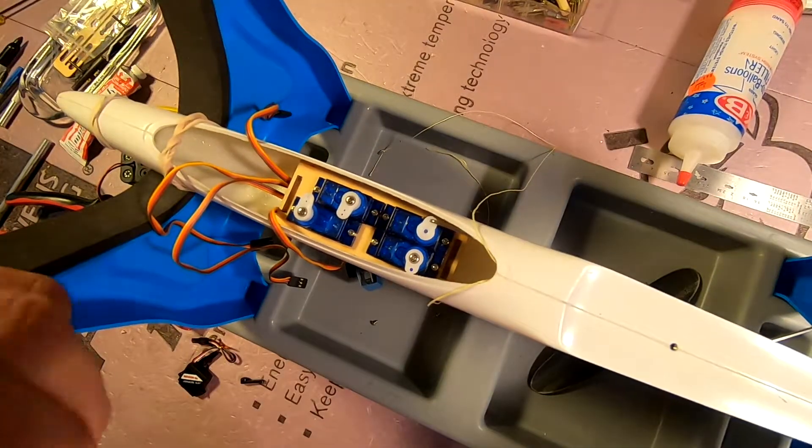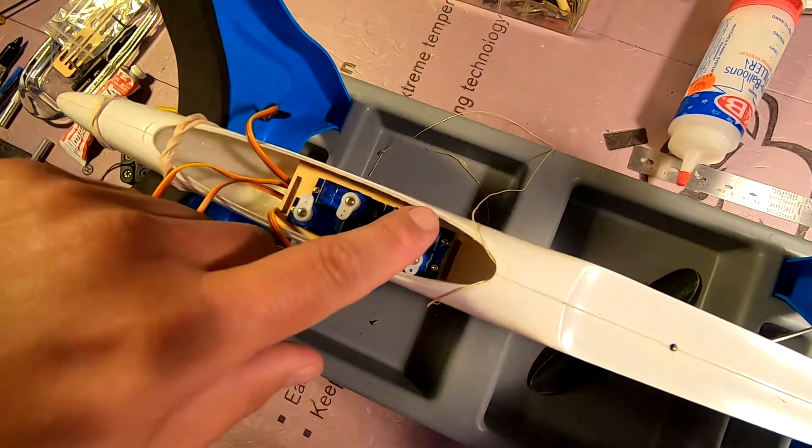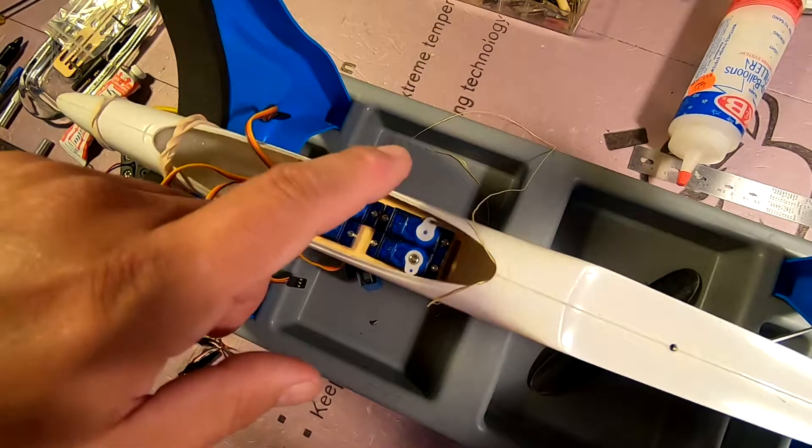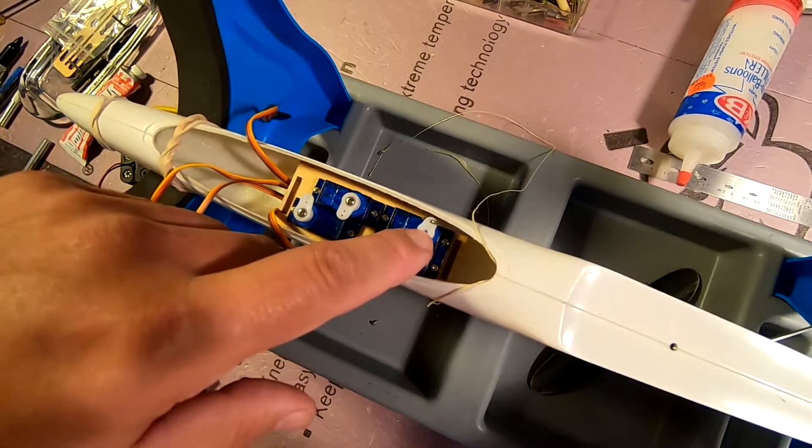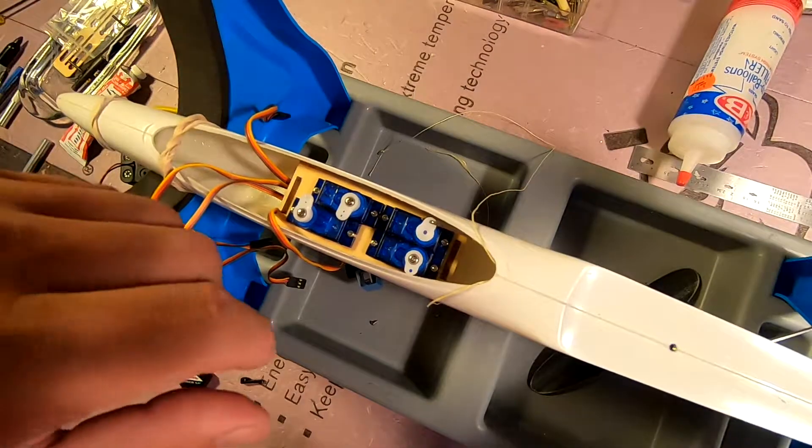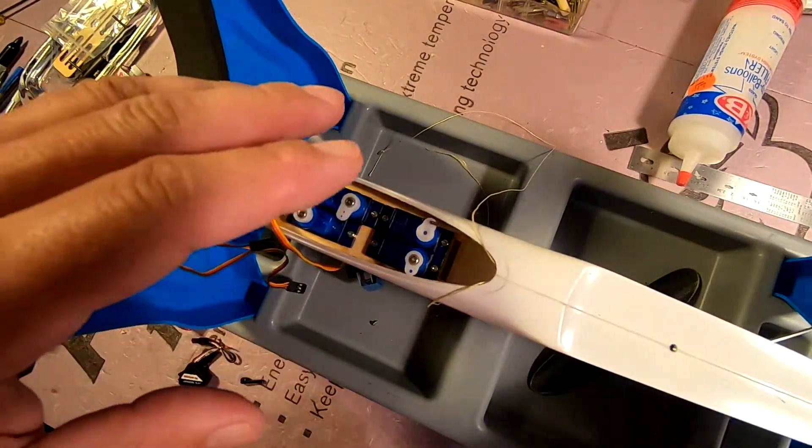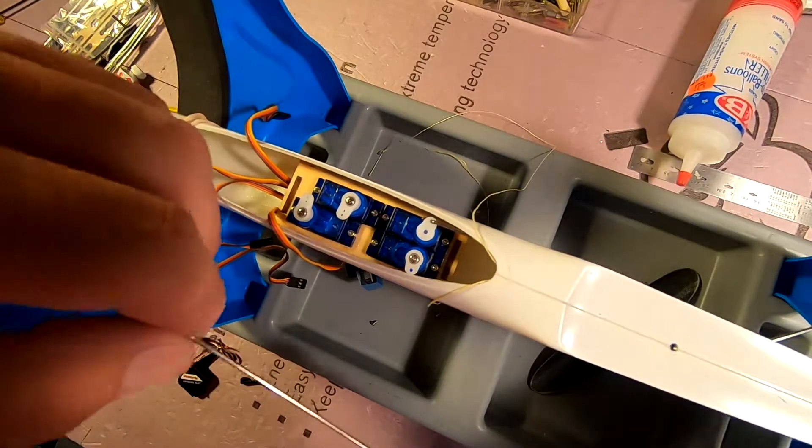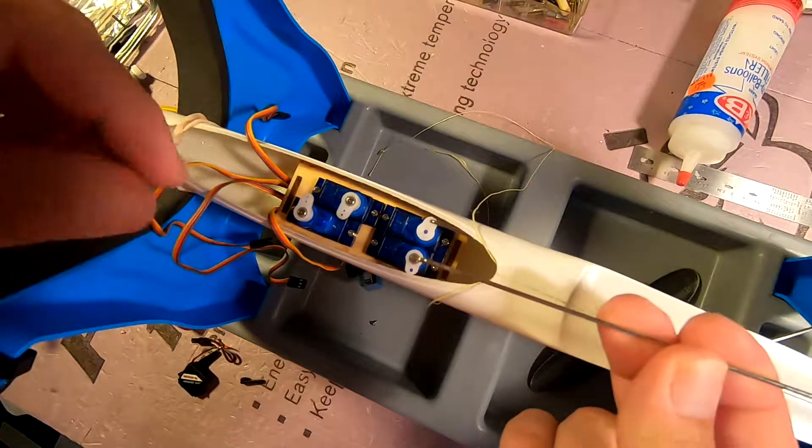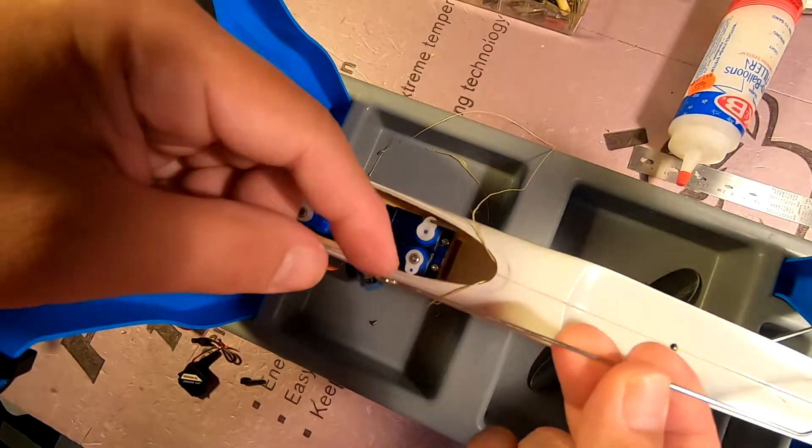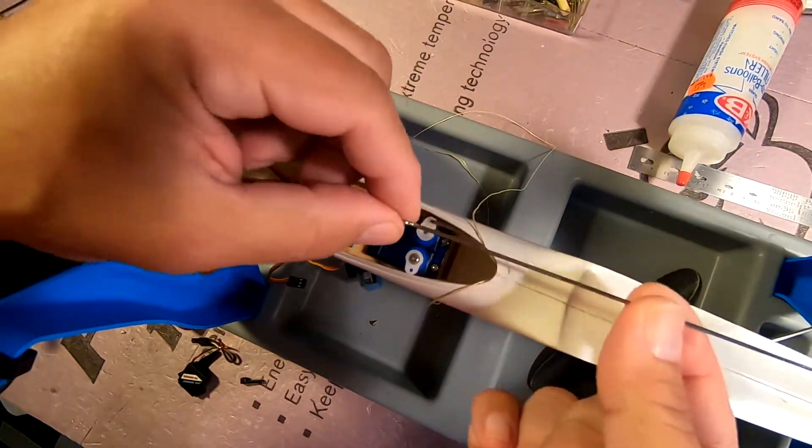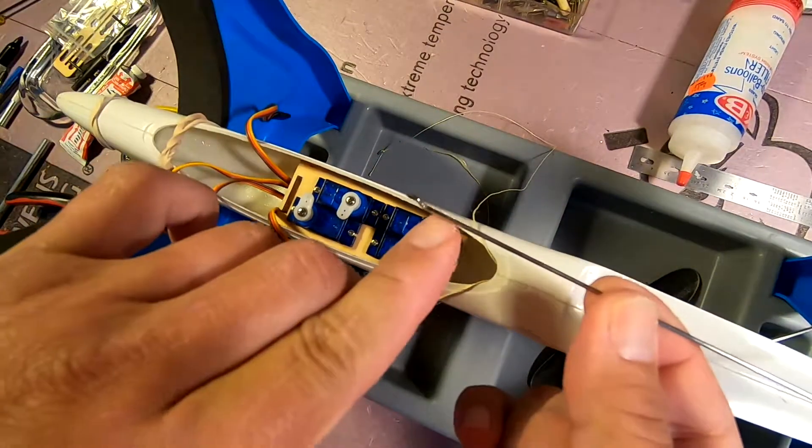I'm really surprised I haven't seen anything online about this issue because these are the control rods provided, these are the horns provided, these are the servos provided. I'm not doing anything that is not exactly to the kit's instructions, and that binding issue is a big problem. It wouldn't matter if I flipped the control rods upside down - I would still be encountering the same issue, just at the other end of the throw.